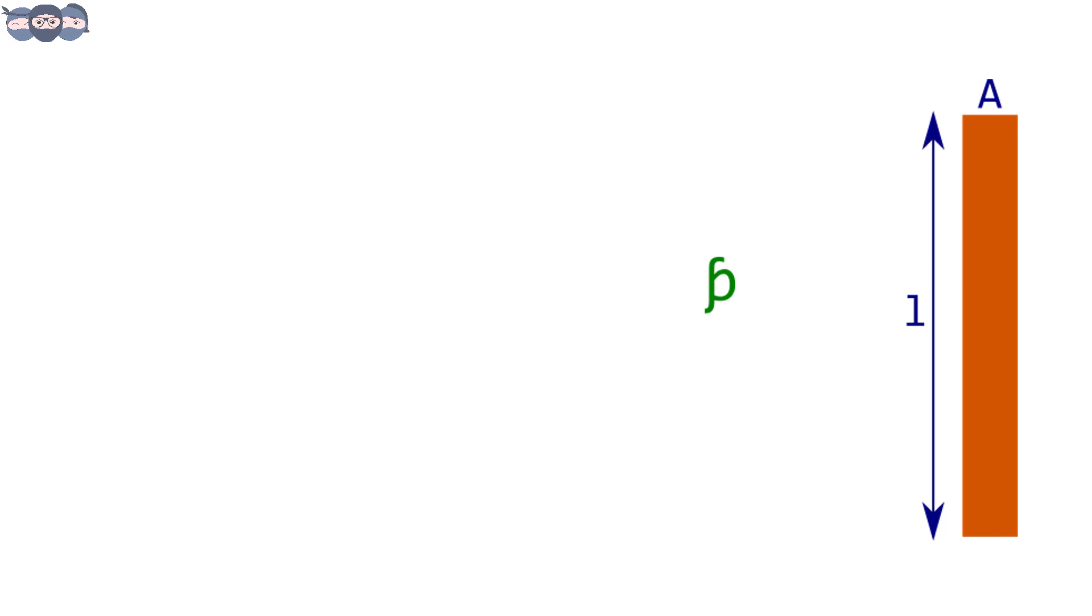Then the resistance R of the conductor is given as R equals rho into L divided by A.